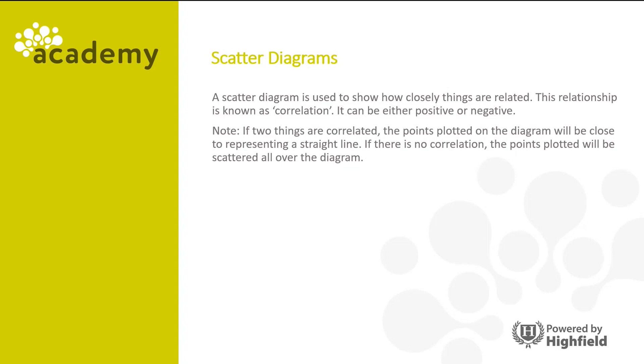If two things are correlated, the points plotted on the diagram will be close to representing a straight line. If there is no correlation, the points plotted will be scattered all over the diagram.